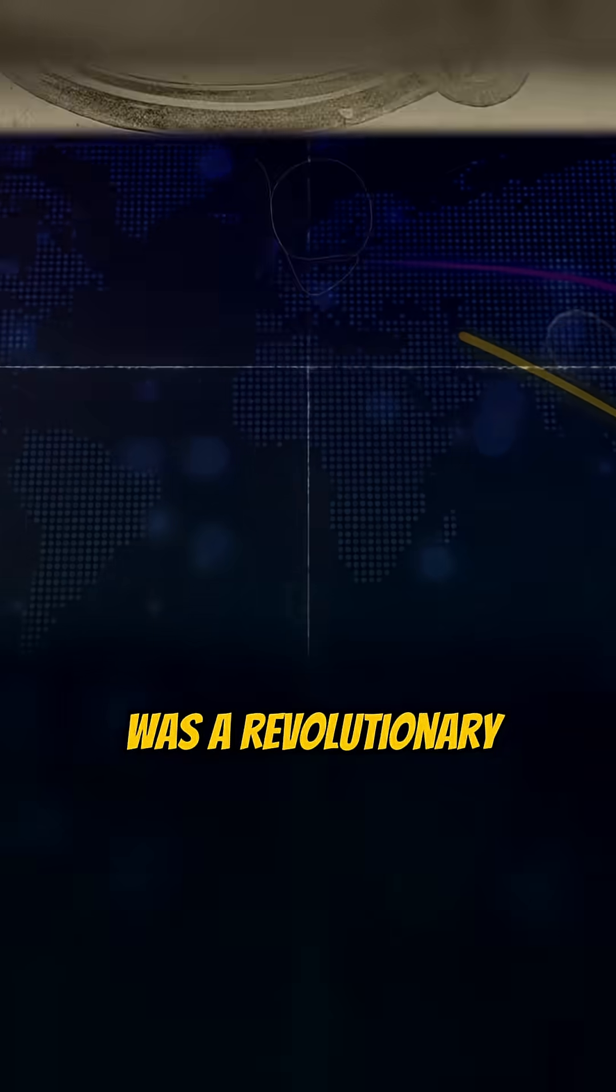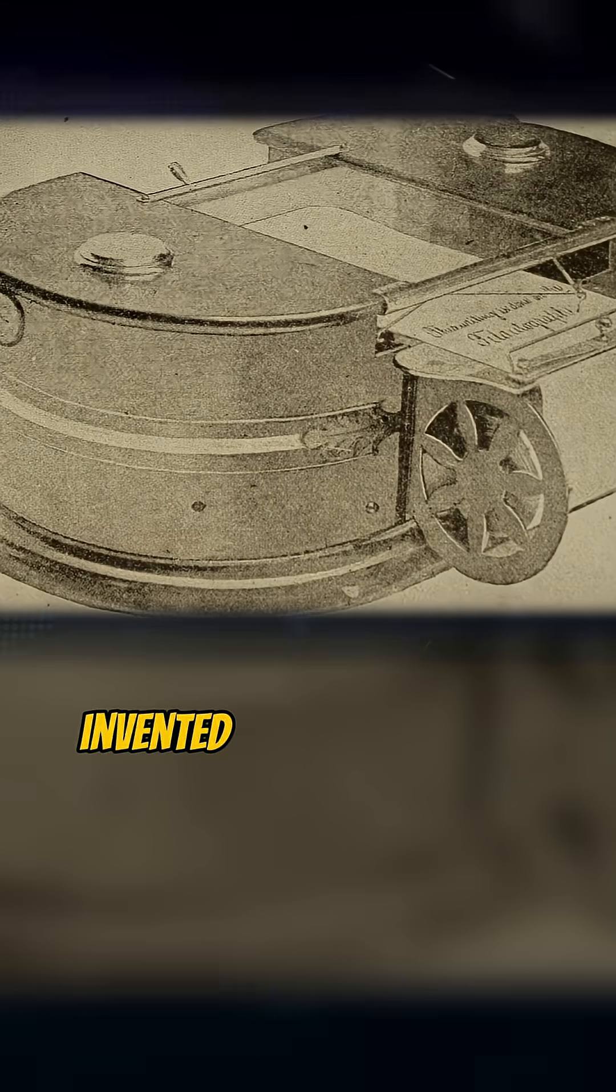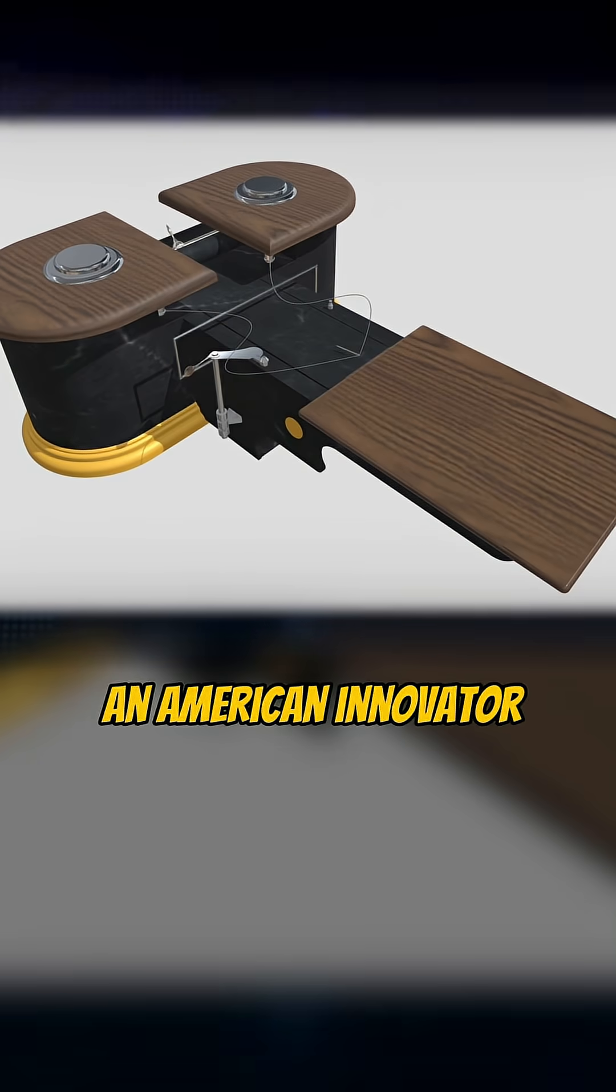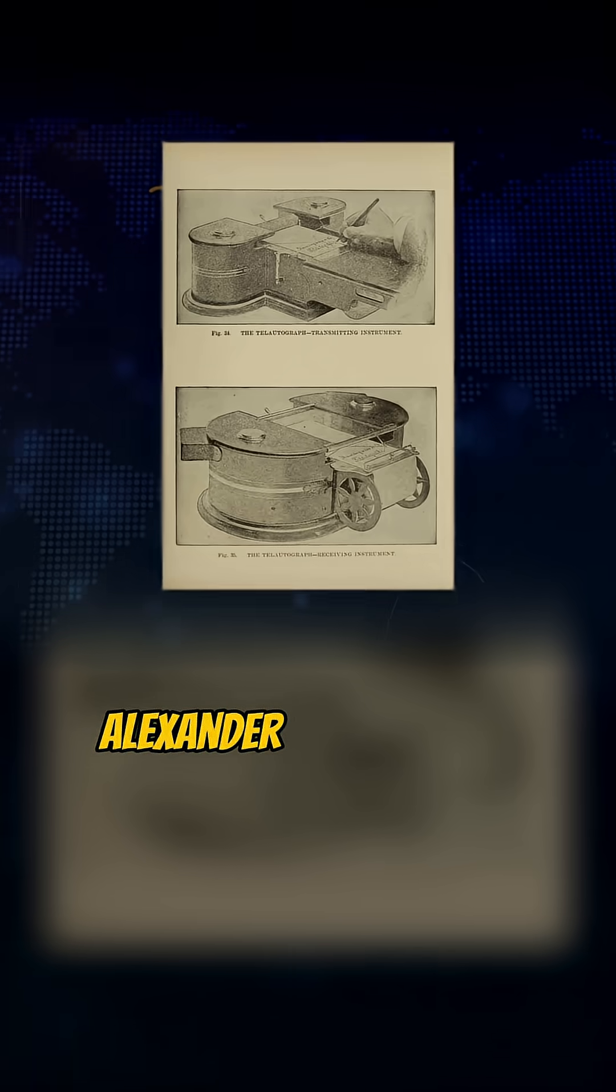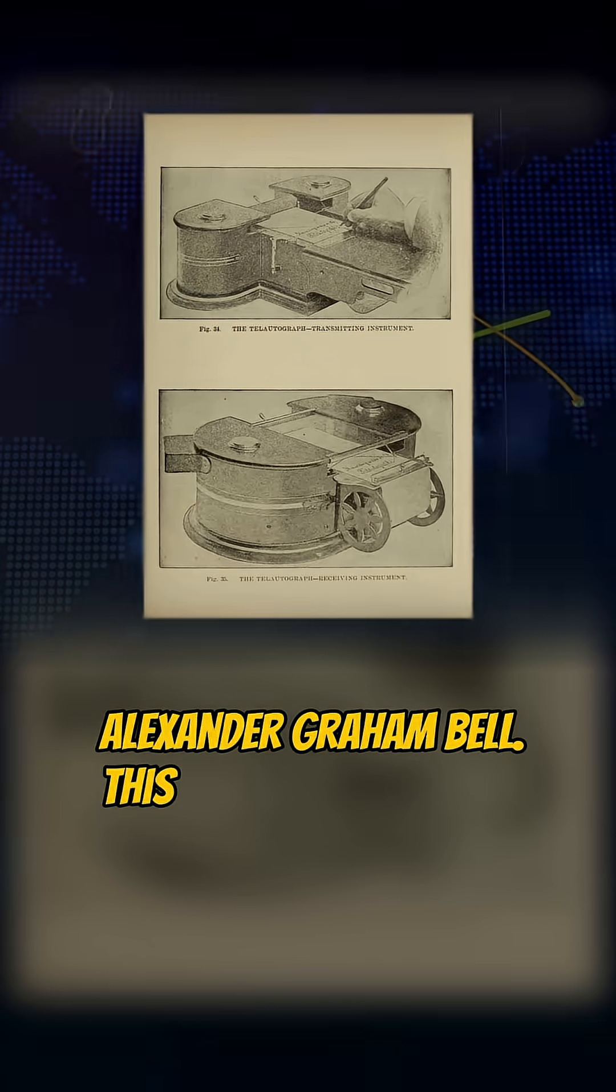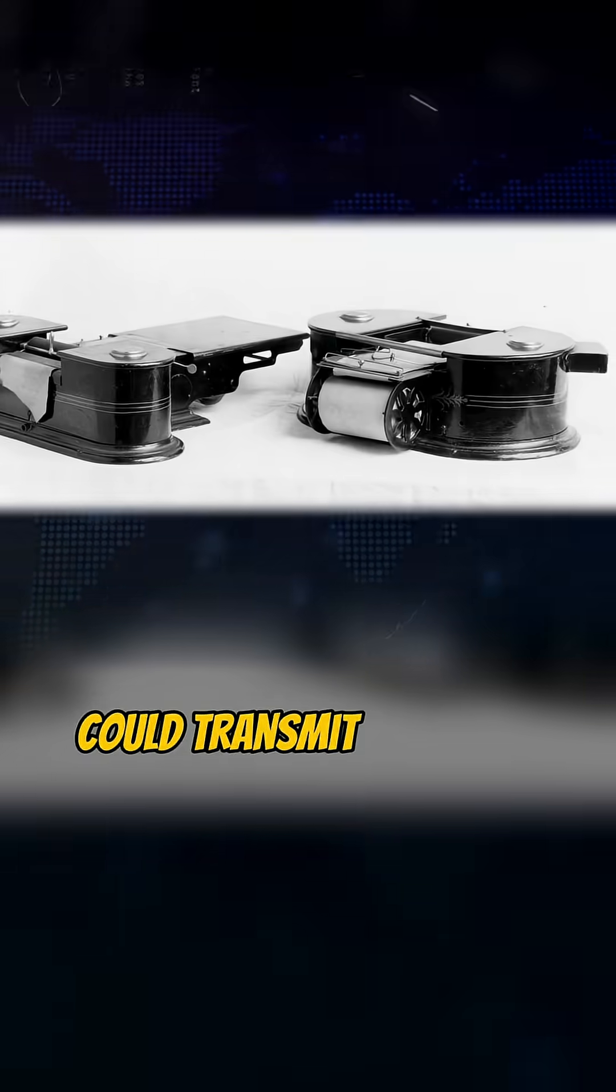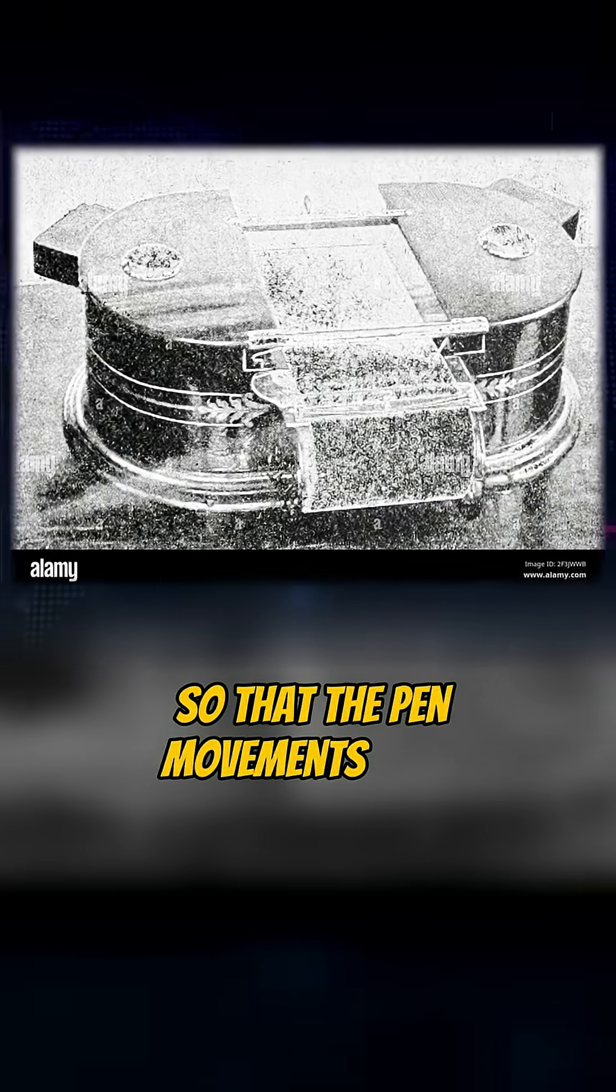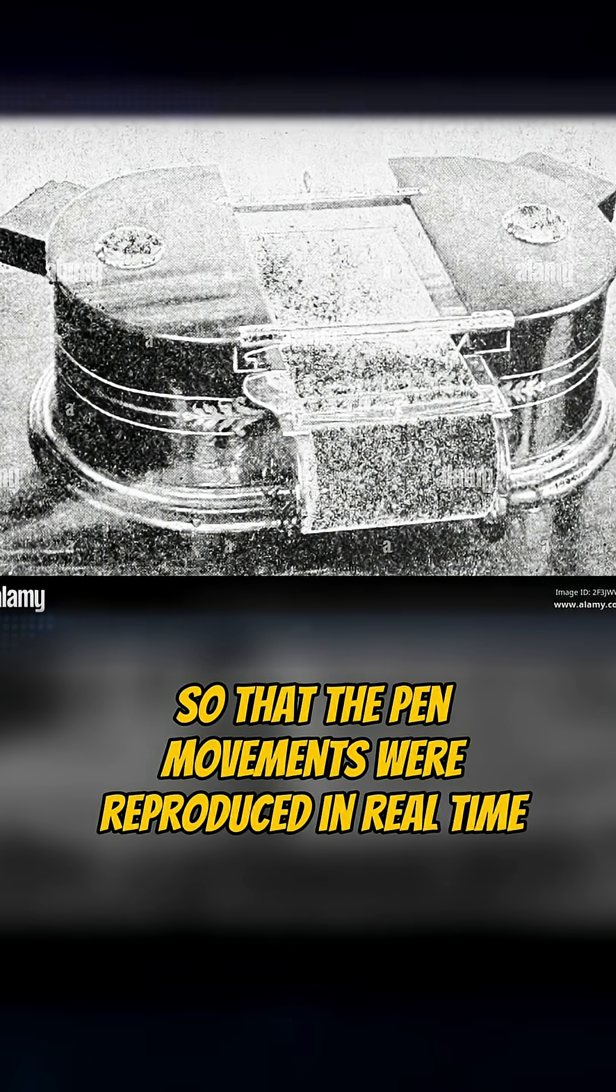The tele-autograph was a revolutionary communication device invented in 1888 by Alisha Gray, an American inventor often overshadowed by his rival Alexander Graham Bell. This electromechanical machine could transmit a person's handwriting over telegraph wires so that the pen movements were reproduced in real time at the receiving end.